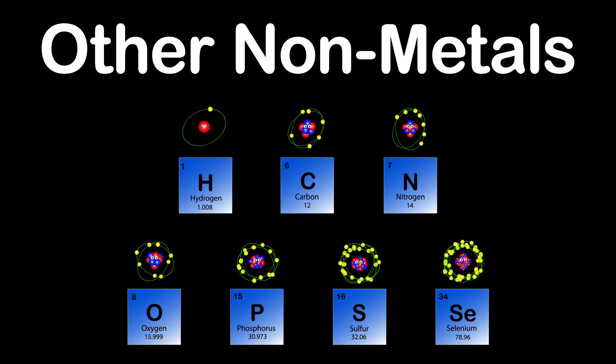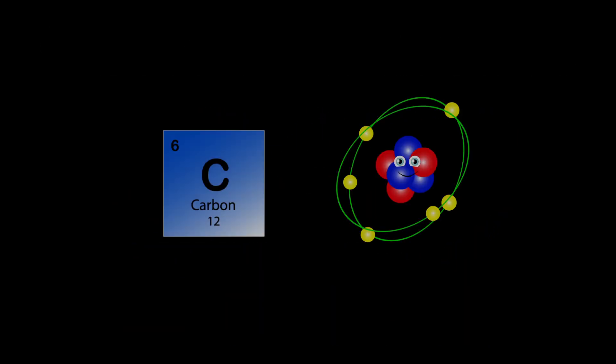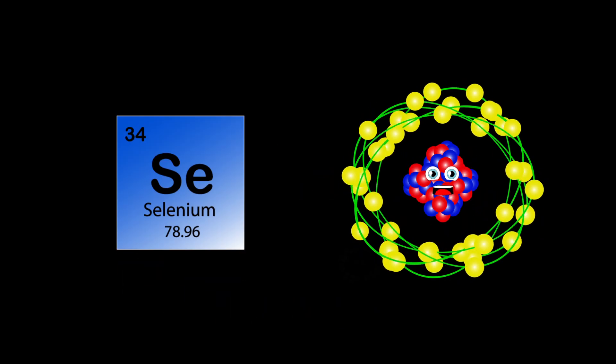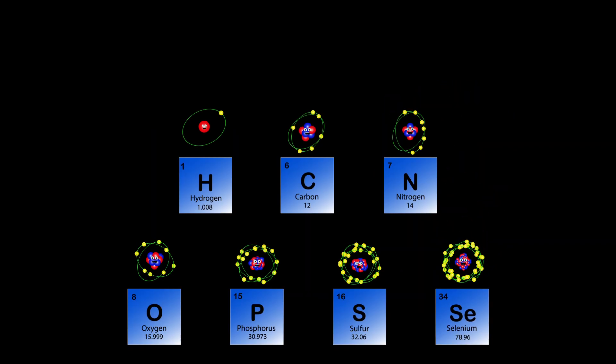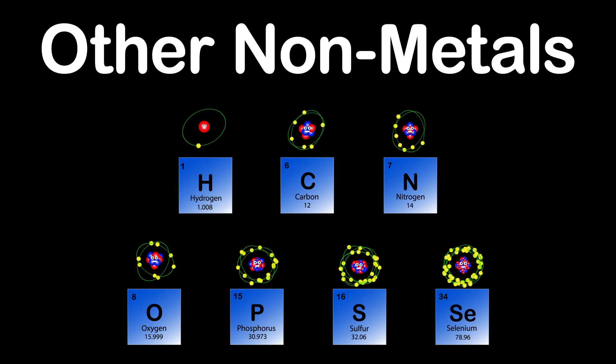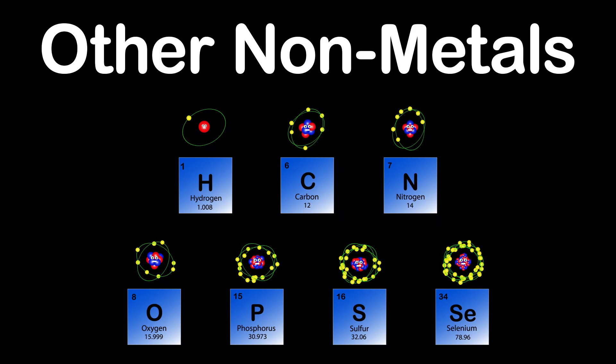There are seven elements in the other non-metals group. We are hydrogen, carbon, nitrogen, oxygen, phosphorus, sulfur, and selenium too. We are chemicals that mostly lack metallic attributes. One of the periodic table's most amazing groups.